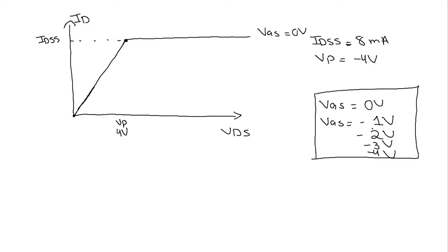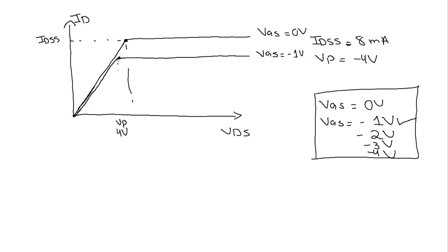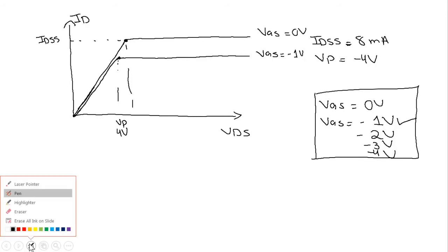Now we are going to plot the output characteristic graph for VGS equal to minus 1 volt. We know that the effect of negative VGS is that the saturation level will be reached at lower values of VDS, that is, pinch-off will be reached at lower values of VDS. Again we are going to have a linear graph, and then at some value of VDS which is less than the previous one, we will reach saturation and have a straight horizontal line. This is for VGS equal to minus 1 volt. Note that this is not IDSS, because IDSS is the maximum drain current. The Vp here will be less than the previous Vp because the pinch-off voltage has also decreased.